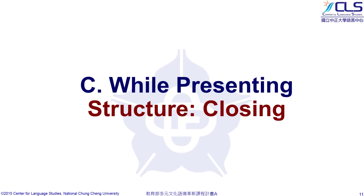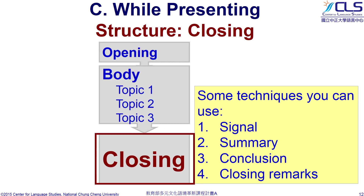Let's look at the final part: closing. The closing part is the most important part of a presentation. First, you need to signal to your audience that you are about to end your presentation. Then give a brief summary — in other words, an overview of what has already been said. And finally, the most important one is the conclusion. Then use closing remarks to end your presentation.